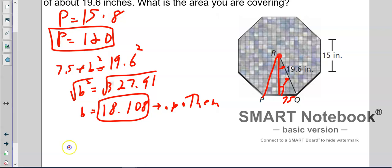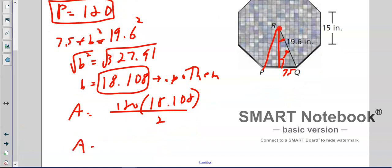So we already have the numbers we need: that 120 and 18.108 divided by 2. So area is 120 times 18.108 divided by 2. So we have 1,086.5 square inches.